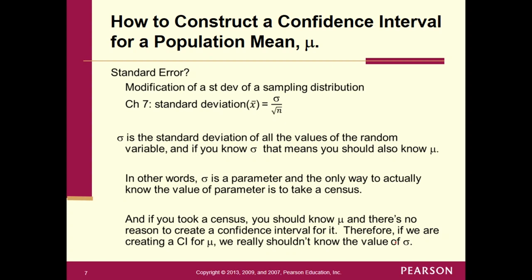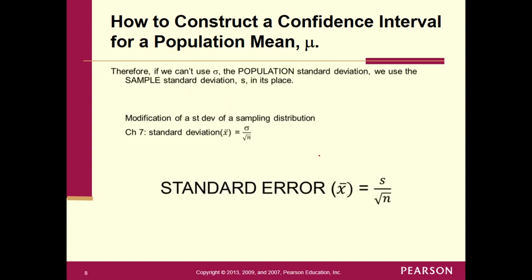If we don't know the population standard deviation, we're going to use the sample standard deviation — that's s, which we calculated back in Chapter 2. So instead of using sigma, we're going to use s. We've got to call this something different: it's now the standard error of the sampling distribution of x-bar, s divided by the square root of n.